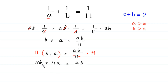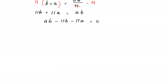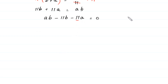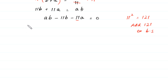Now, we move 11B and 11A to the right side. AB minus 11B minus 11A is equal to 0. Because the square of 11 is 121, we add 121 to both sides: AB minus 11B minus 11A plus 121 is equal to 121.